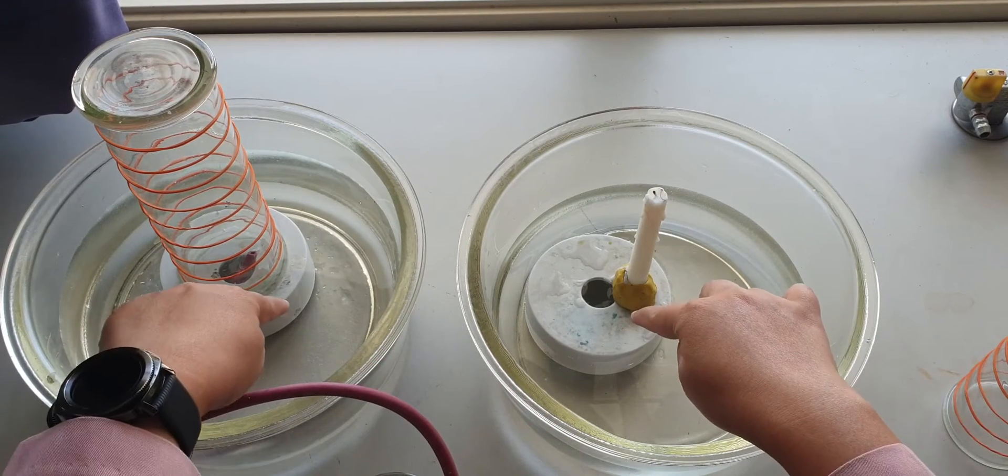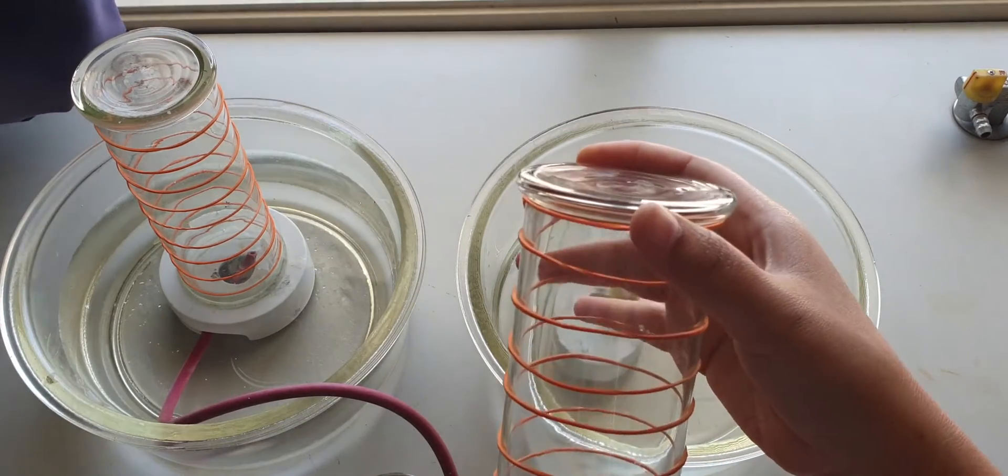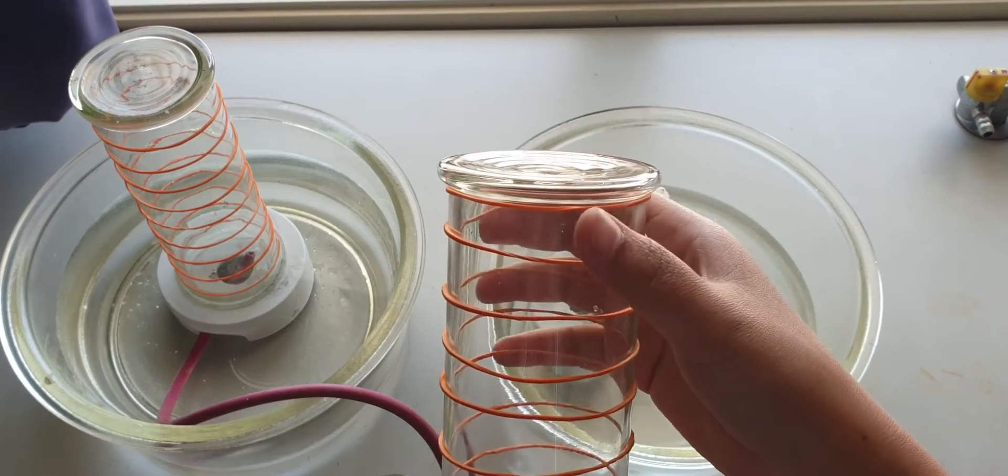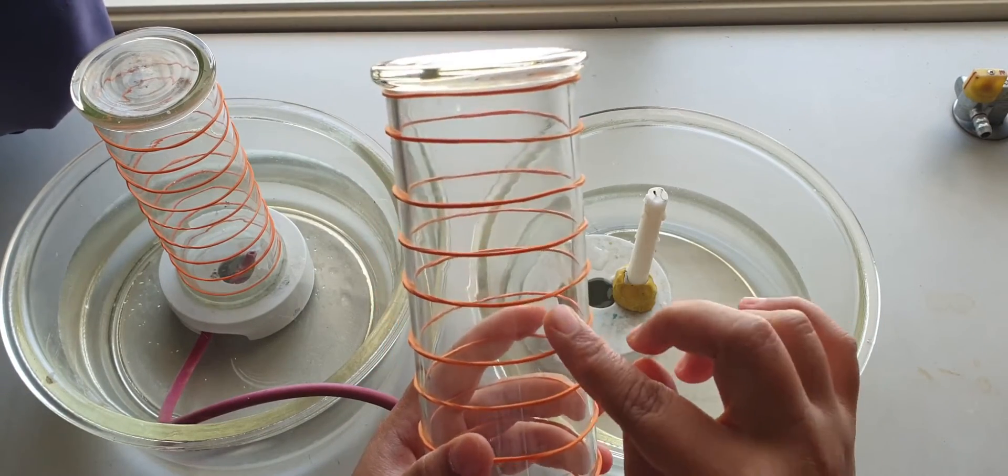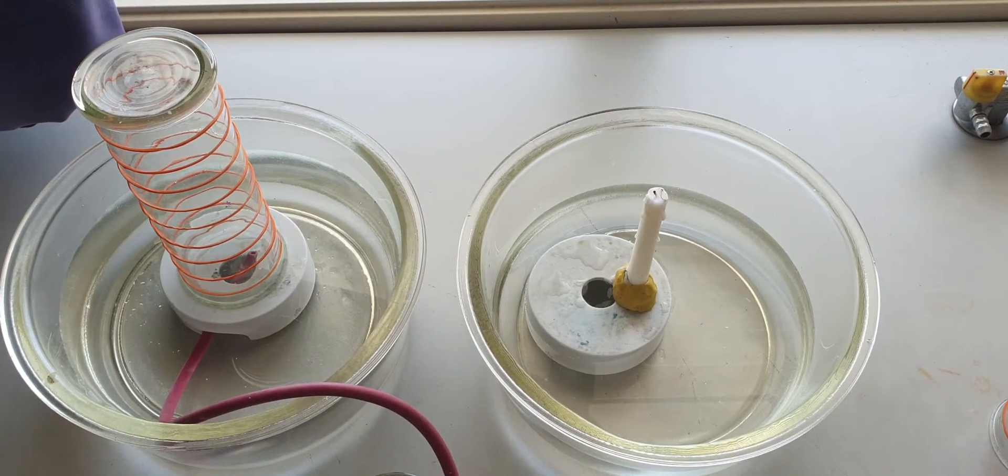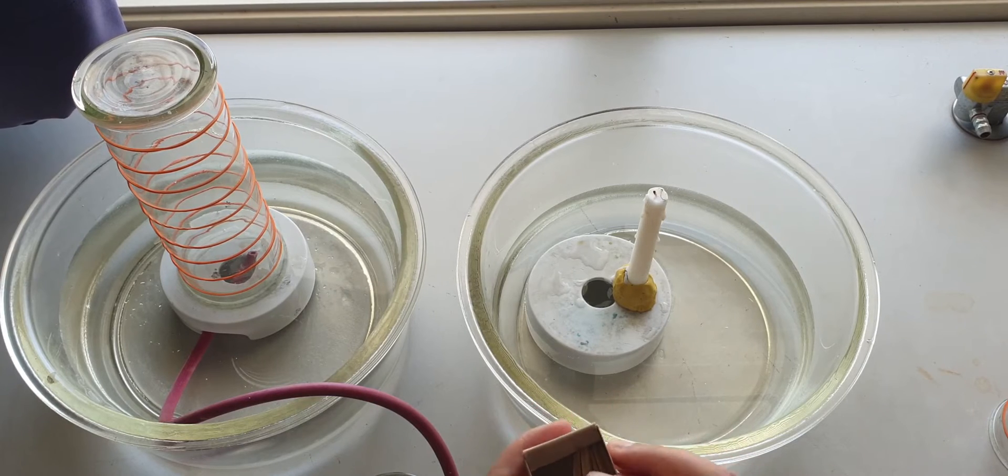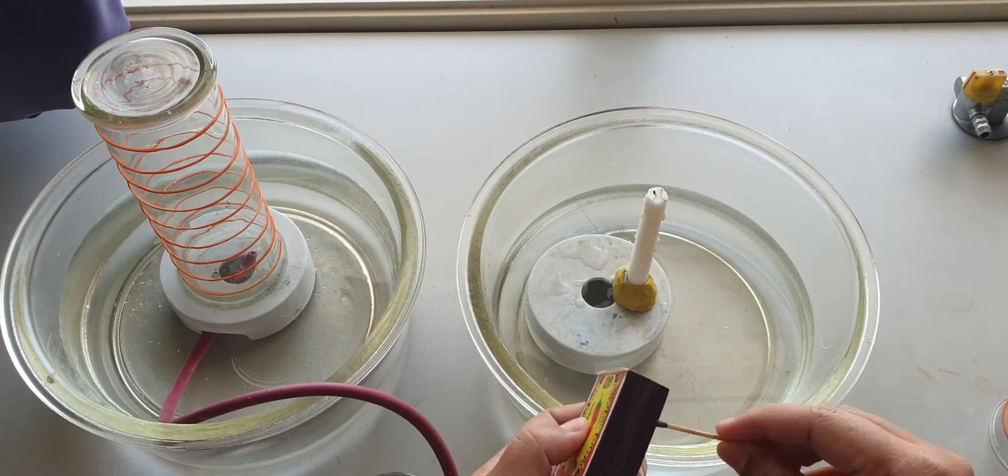What you need to do first is to divide the gas jar into ten equal parts: one, two, three, four, five, six, seven, eight, nine, ten. And then you need to light up the candle and insert the gas jar containing the inhaled air into the candle.